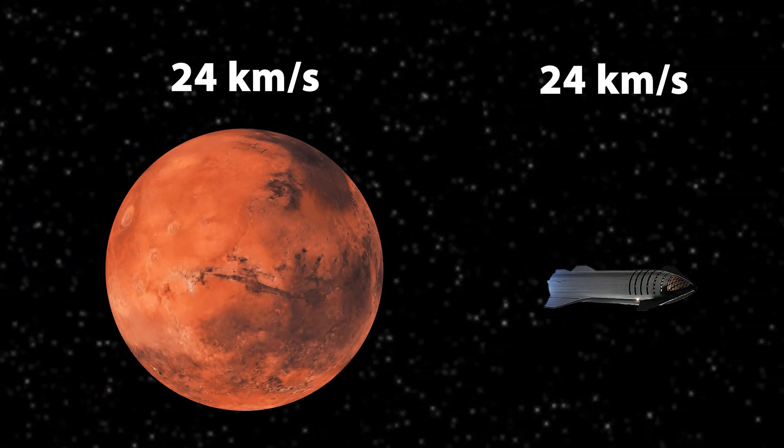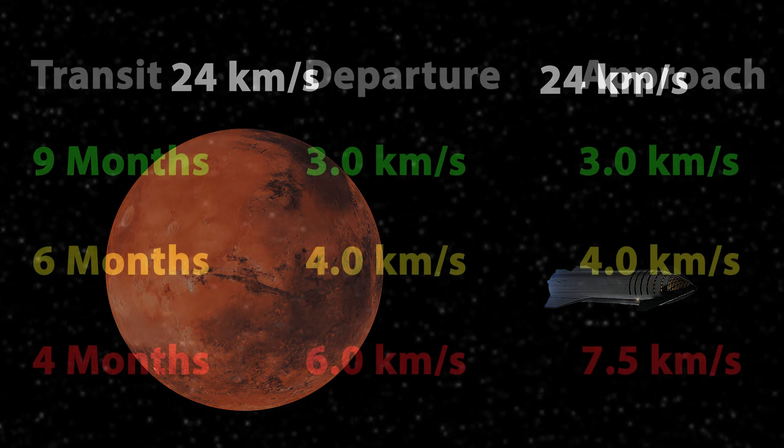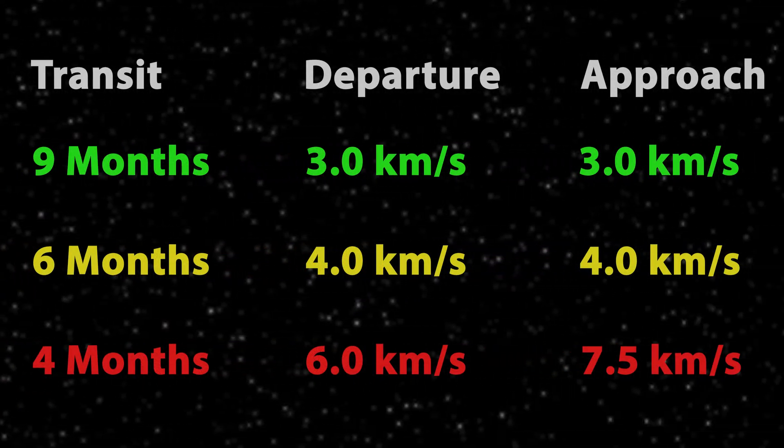You might think the extra velocity would make it easier to land on Mars, since on arrival your speed would be more similar to Mars's. But faster routes to Mars actually lead to larger approach velocities.